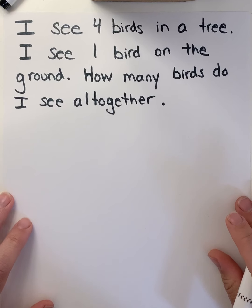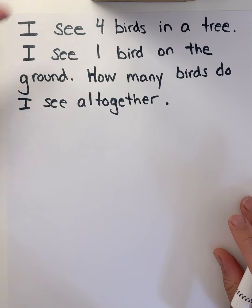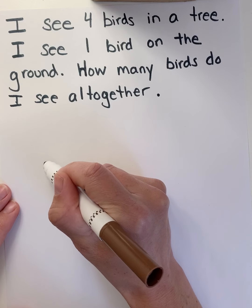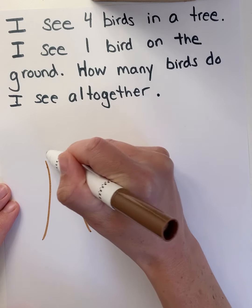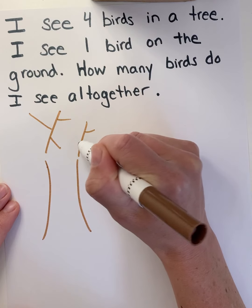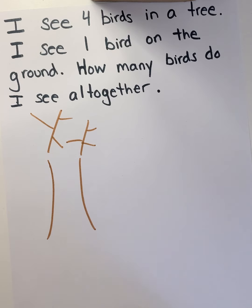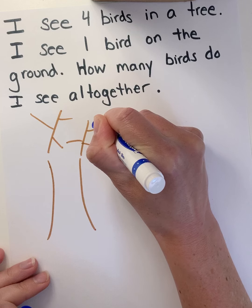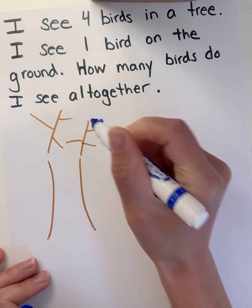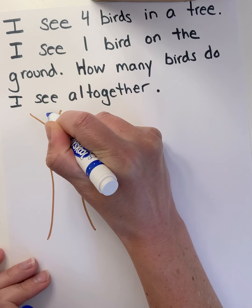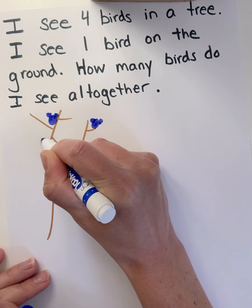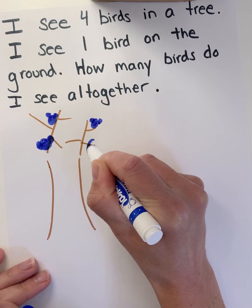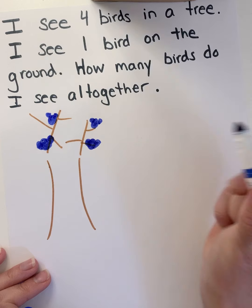I'm going to draw a picture, and when I draw a picture it doesn't have to be super fancy, but it has to help me solve my problem. I could draw the tree — here are some branches — I'm just going to draw a quick little picture to help me visually see those birds. How many birds are up in my tree? Four, right? So here's one, two, three, and here's four.